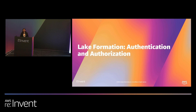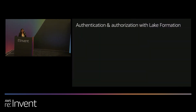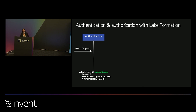We'll begin with a quick intro to the Lake Formation Authentication and Authorization model. If you want to make a call to any AWS services via an API, you need to be authenticated. For authentication, you can use the secret key and access key, or you can federate yourself from your Active Directory in your on-premise environment.